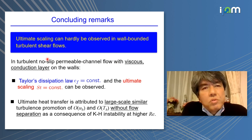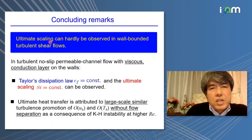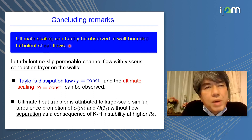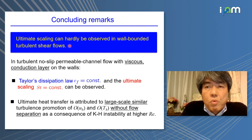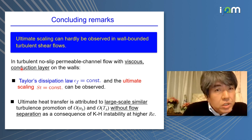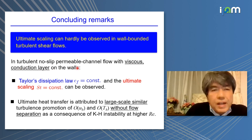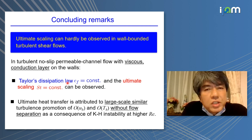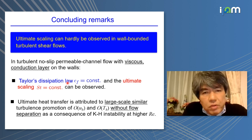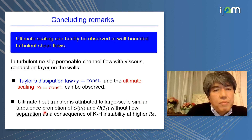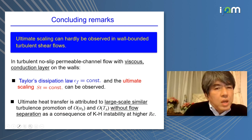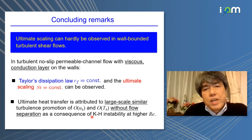To conclude: ultimate scaling can hardly be observed in wall-bounded turbulent shear flows in the smooth or rough wall configuration. However, in turbulent no-slip permeable channel flow with viscous and conduction layers on the walls, Taylor's dissipation law and ultimate scaling can be observed. Ultimate heat transfer is attributed to large-scale similar turbulence enhancement without flow separation, as a consequence of Kelvin-Helmholtz instability at higher Reynolds number.